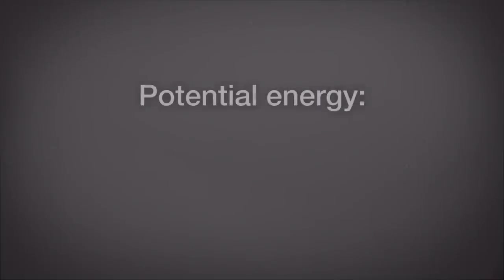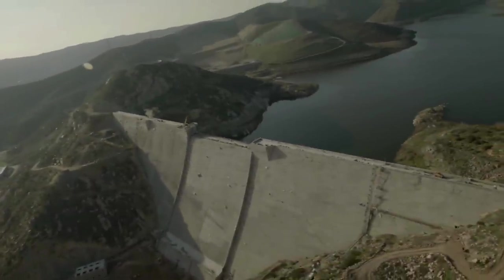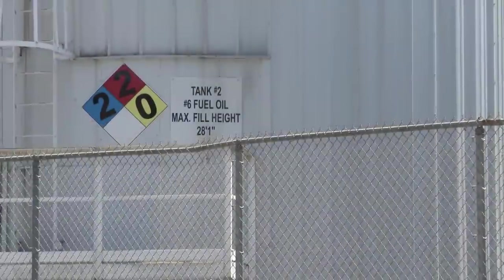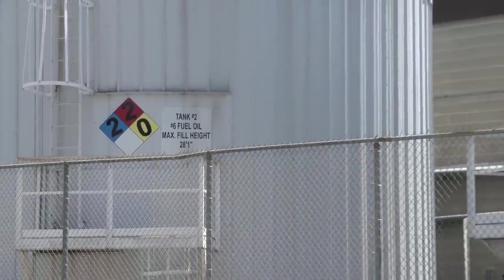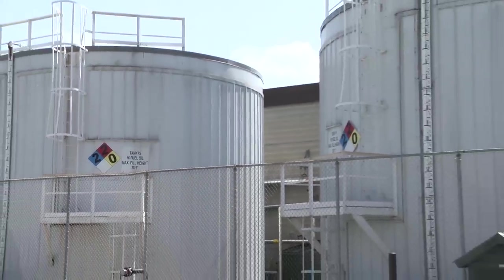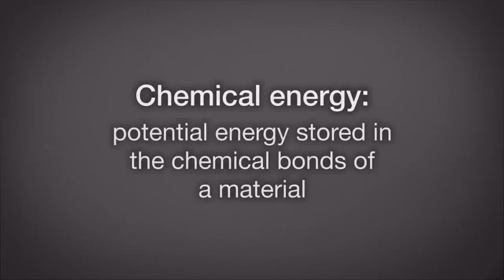There are two important forms of energy to be aware of: potential and kinetic. Potential energy is energy that is stored but has not yet been released. A prime example is water impounded behind a hydro dam. Chemical energy in oil or another fossil fuel — say, the petroleum at the Dartmouth power plant — is the potential energy stored in the chemical bonds of that fuel.